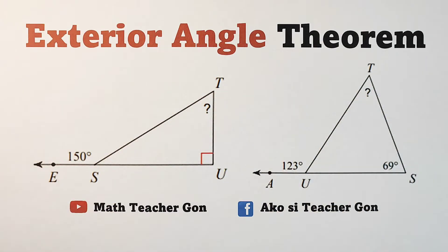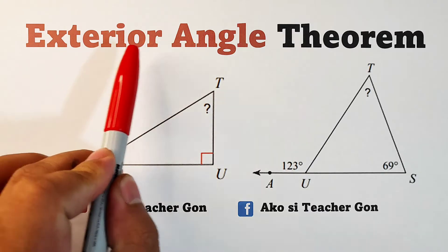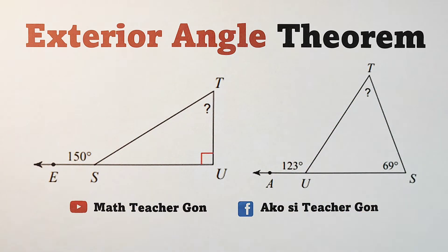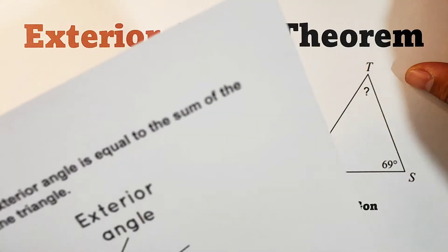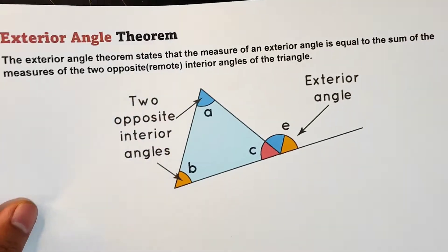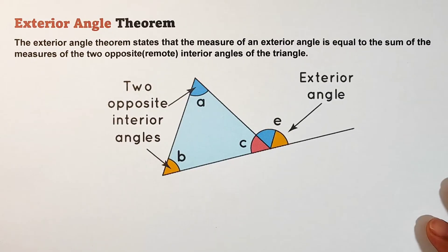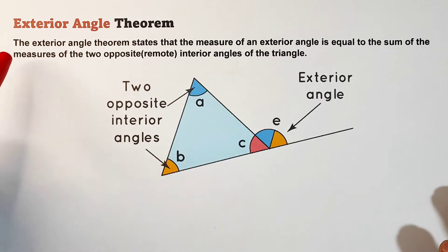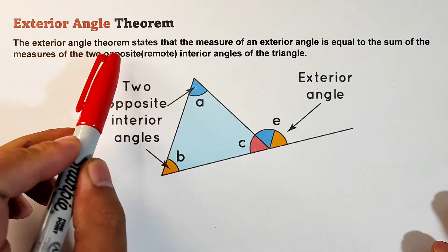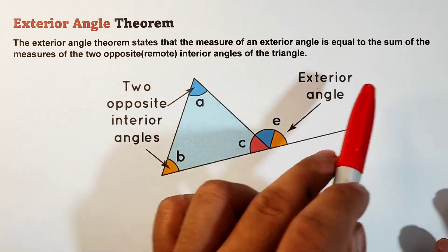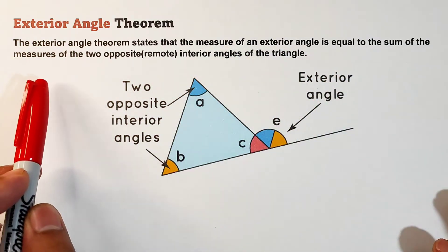Hi guys, it's me, Teacher. In today's video we will talk about the Exterior Angle Theorem. So without further ado, let's do this topic. The exterior angle theorem states that the measure of an exterior angle is equal to the sum of the measures of the two opposite remote interior angles of a triangle.